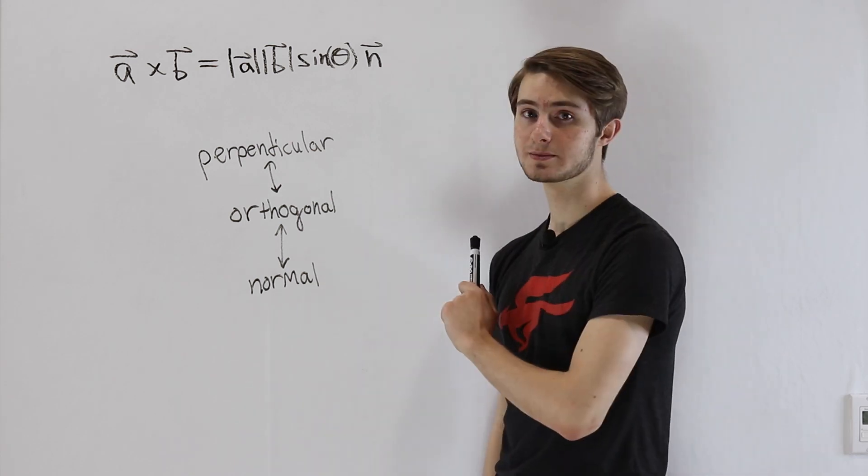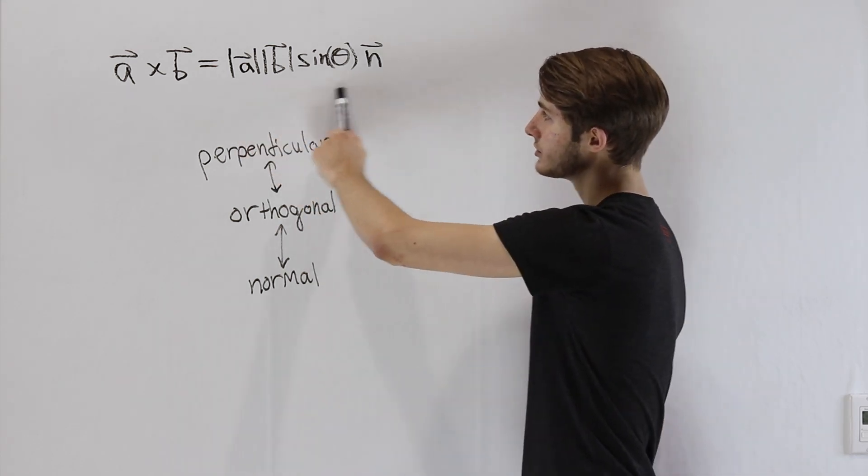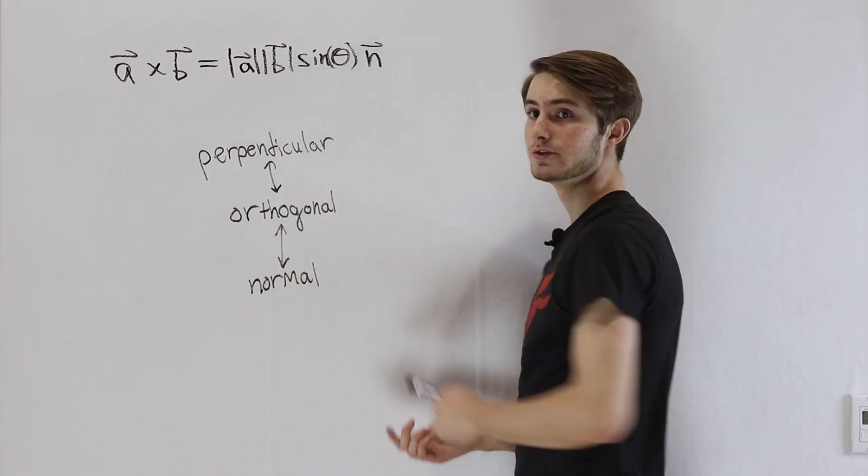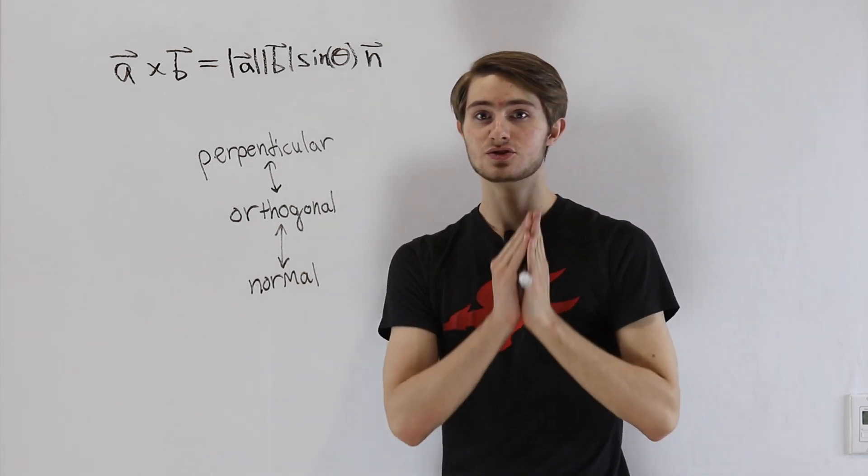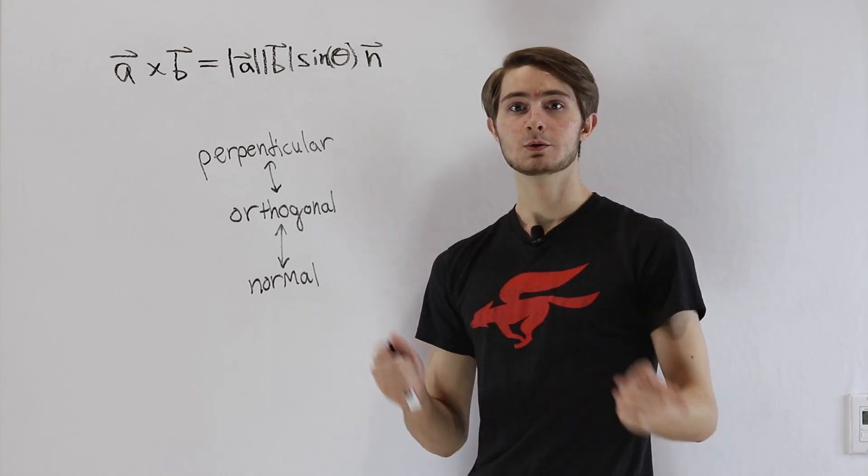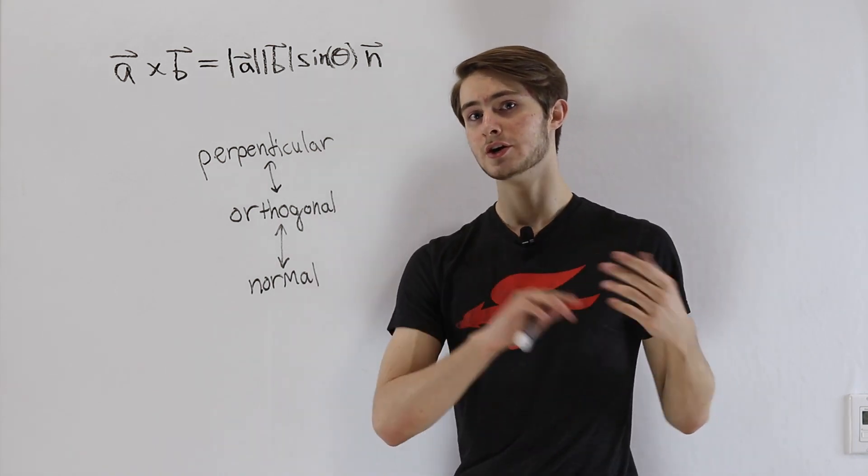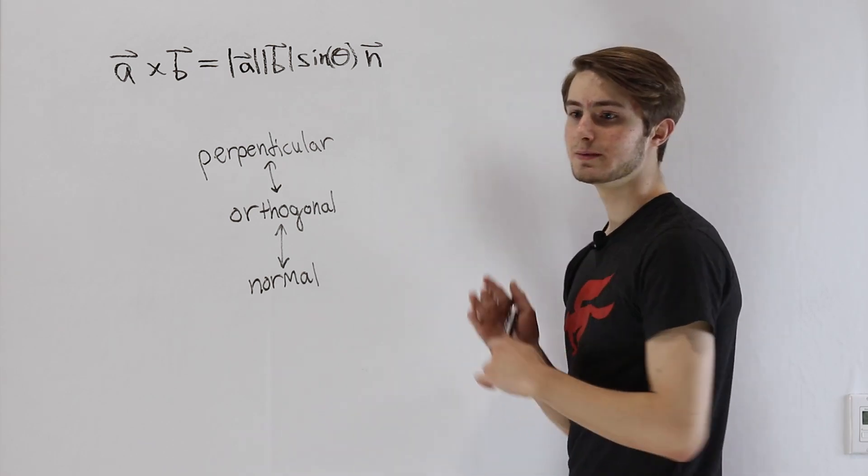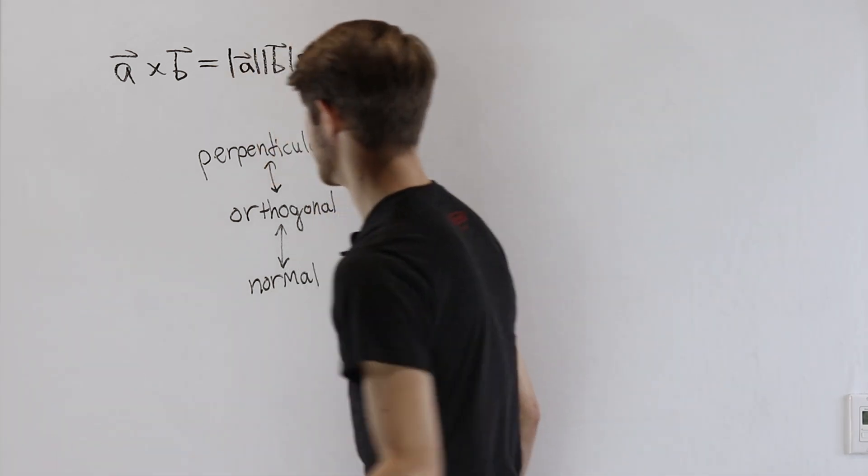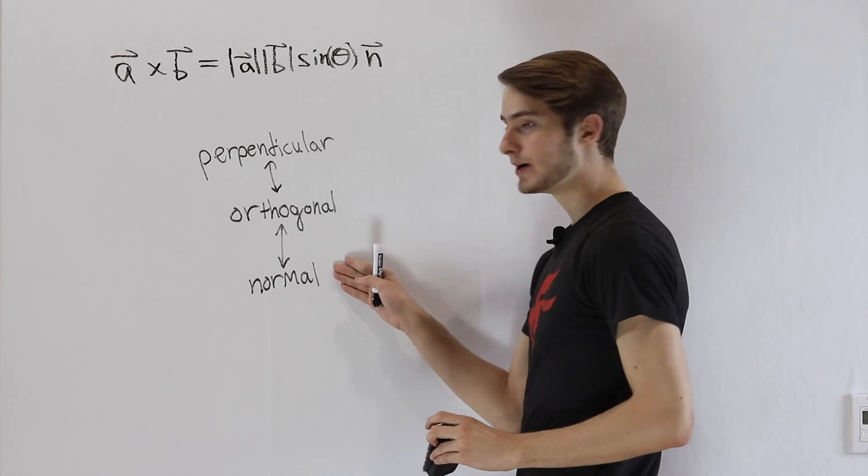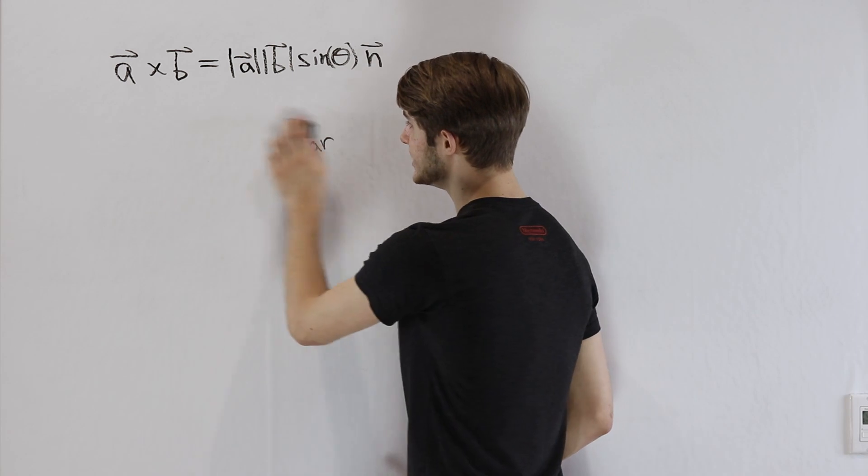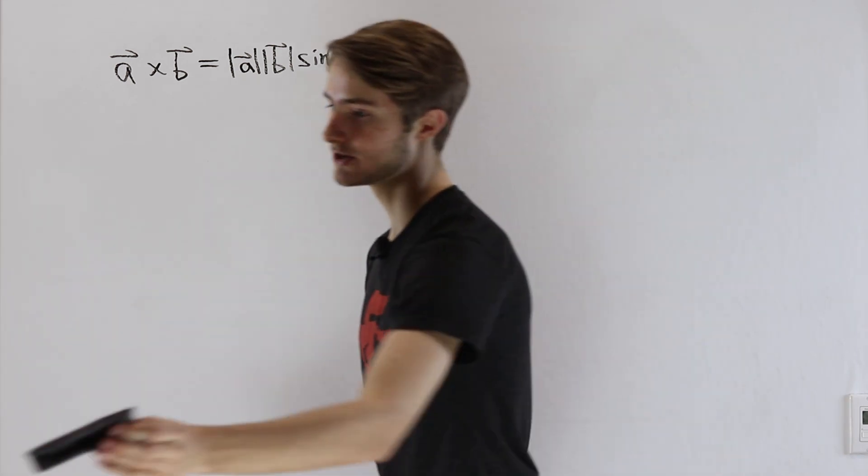So if we can find a formula that gives us this cross product result without us already knowing what that normal vector is, that's going to be super useful later down the line when we want to find vectors that are normal to our other vectors. Let's start thinking about exactly what's going on here. First of all, when we think about whether a vector is normal to another vector, we have to realize that there isn't just one normal vector.